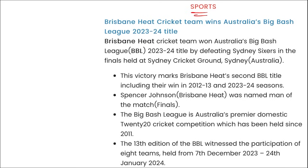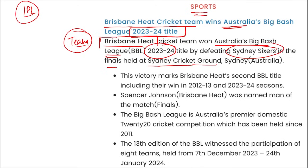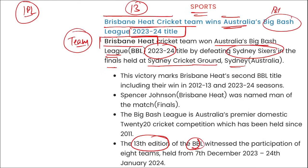In sports: Brisbane Heat cricket team won Australia's Big Bash League (BBL) 2023-24 title. They defeated Sydney Sixers in the final held at Sydney Cricket Ground, Sydney, Australia. This was the 13th edition of the Big Bash League.